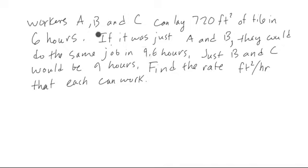Let's suppose we have three workers A, B, and C, and they can, working together, lay 720 square feet of tile in six hours. If just A and B are working together, they could do the same job in 9.6 hours, and if it were just B and C, it would be nine hours.